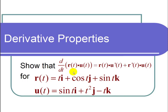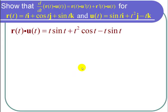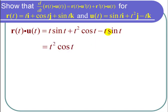I need to find r of t dot u of t. r of t dot u of t will be t times the sine of t, plus t squared cosine of t, plus sine of t times negative t, or minus t sine of t. I can cancel out these t sine of t's and I get that the dot product is just t squared times the cosine of t.